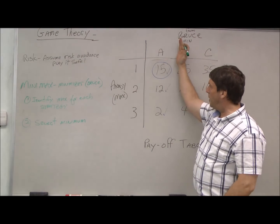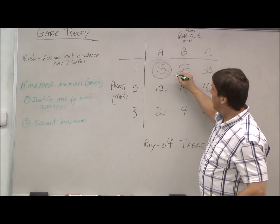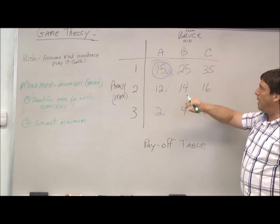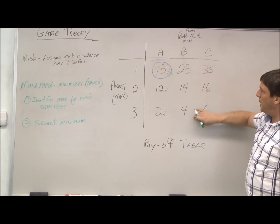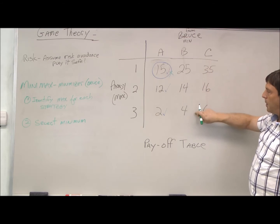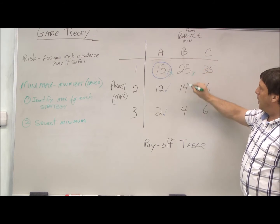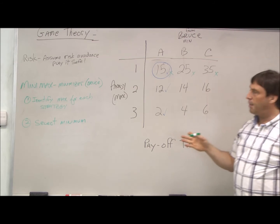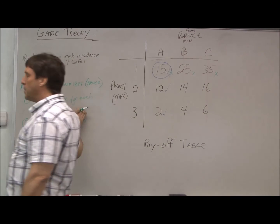So he looks at strategy A: 2, 12, or 15. 15 is the greatest, so that's the maximum. He looks at strategy B, he has 25, 14, and 4, obviously that's 25. Then he looks at strategy C: 35, 16, 6, and we have 35. So he's identified the maximum for each strategy.